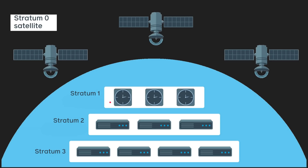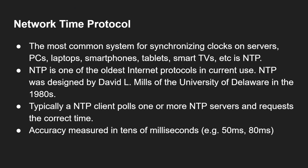Once you get to the 15th layer, you're not allowed to take the time from it — that's the bottom layer — but from layer 14 upwards. Generally on the internet you get stratum one, two, three, maybe four. The most common system for synchronising clocks on servers, PCs, laptops, smartphones, tablets, smart TVs, etc., is NTP — the Network Time Protocol.